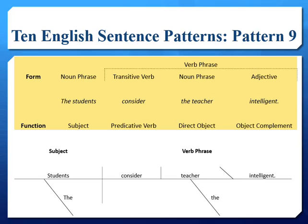Another way of thinking about object complements is to think of the direct object 'the teacher' and the object complement 'intelligent' as a way of saying that the teacher is intelligent. Object complements do two things in sentences: number one, the object complement completes the meaning of the verb; and number two, the object complement describes the direct object.